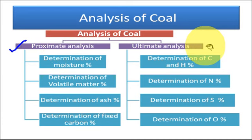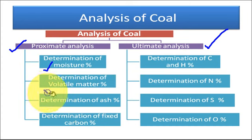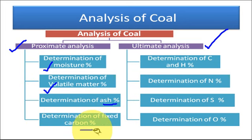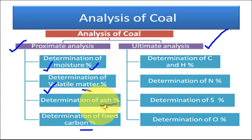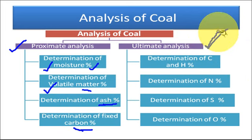Proximate analysis is basically the determination of the moisture content in the coal, volatile matter percentage, ash percentage, and the fixed carbon percentage in the coal. It is called the proximate analysis because the data collected may vary with the procedure adopted for the analysis. It involves determination of moisture, volatile matter, ash, and percentage of fixed carbon in the coal sample.